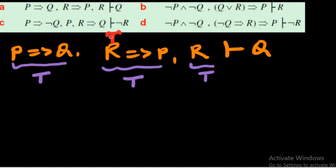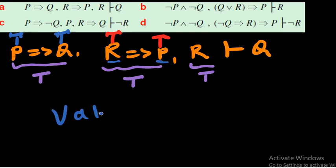Since r is true and r→p is a premise (true), p must be true. Then since p is true and p→q is a premise (true), q must be true. Step by step, starting from r, we derive p and then q. Therefore the conclusion q is true and the argument is valid.